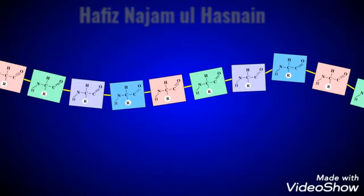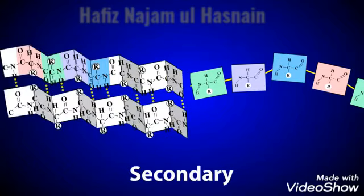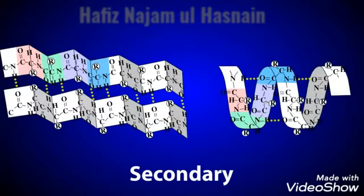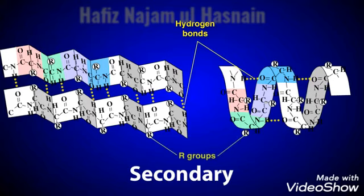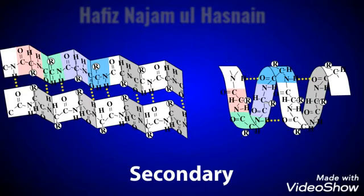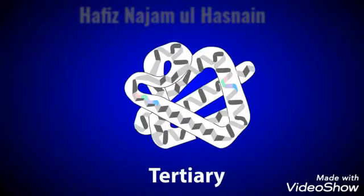The secondary structure refers to the pleated sheet, or helix, that a protein chain can form due to hydrogen bonding and other chemical attractions between the R groups of nearby amino acids. The overall shape of a polypeptide is called its tertiary structure.